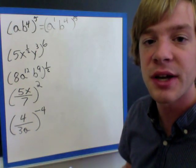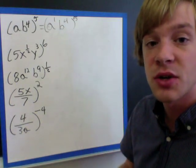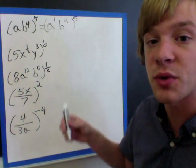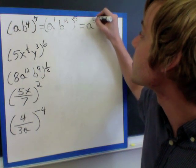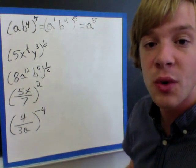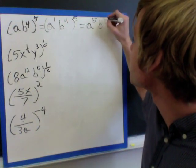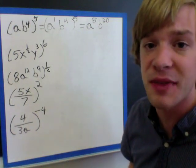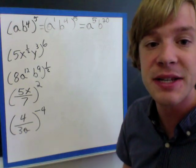Now I'm going to multiply my exponent outside times the exponents I have inside. So I have 5 times the exponent of 1, which gives me a to the 5th. And then I have 5 times the exponent 4, which gives me b to the 20th. And that's it — it's that simple as long as you follow these rules.